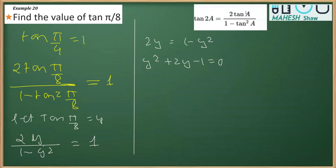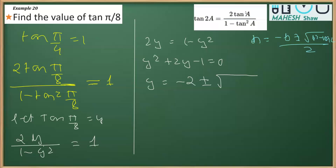Using the quadratic formula y = (−b ± √(b² − 4ac)) / 2a, where a = 1, b = 2, and c = −1, we get y = (−2 ± √(2² − 4·1·(−1))) / (2·1), which simplifies to y = (−2 ± √(4 + 4)) / 2.